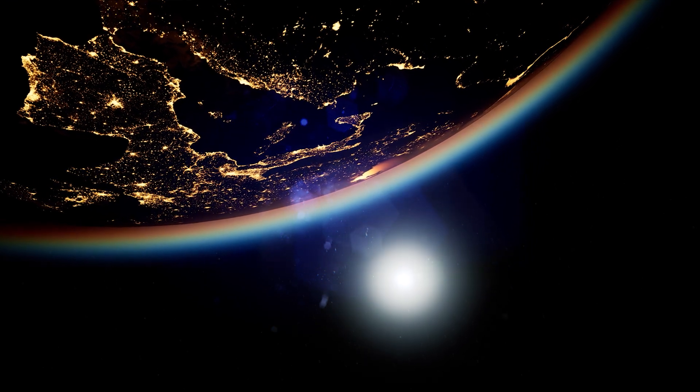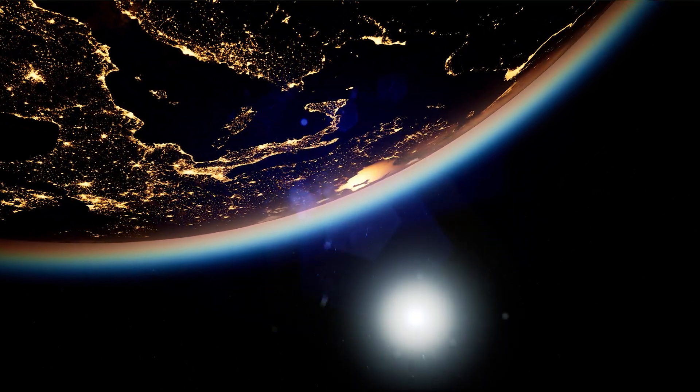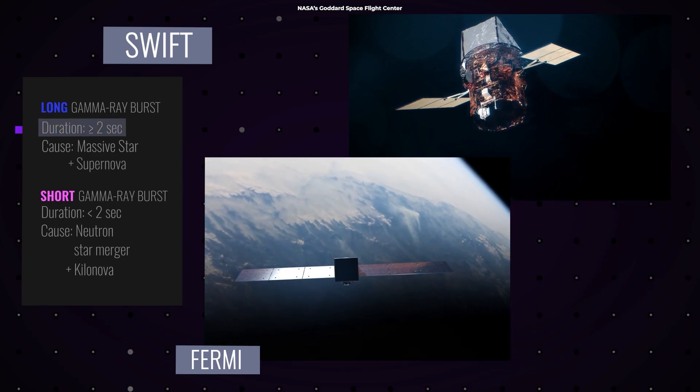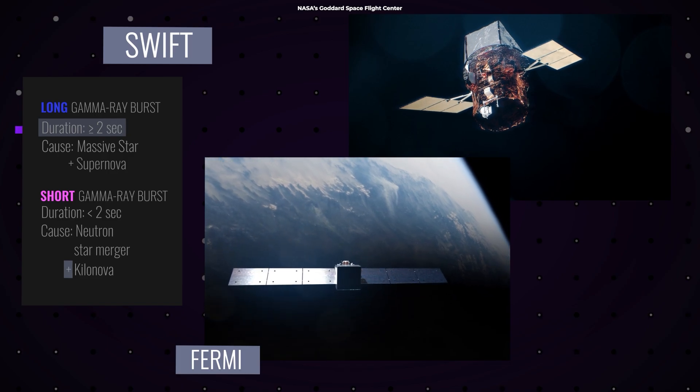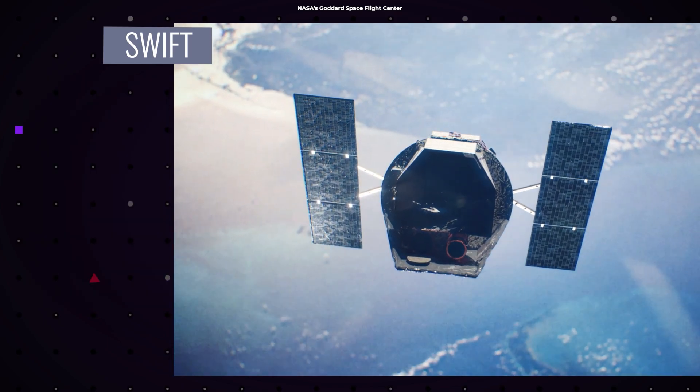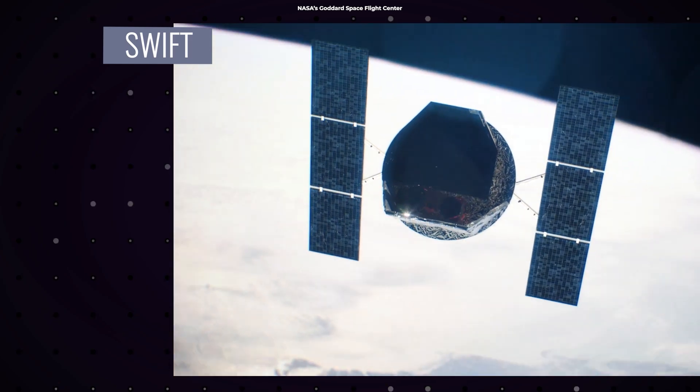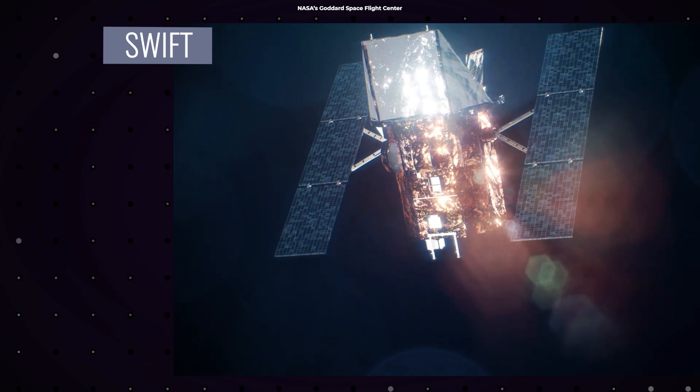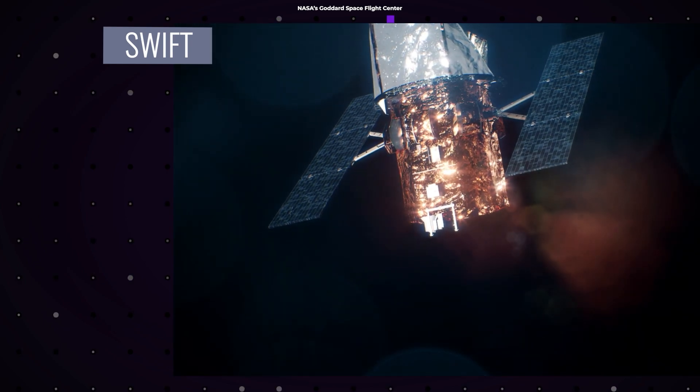Now, you might be wondering, how on Earth do we know all this? Well, it's all thanks to some high-tech space telescopes like the Fermi Gamma Ray Space Telescope, and the Swift Gamma Ray Burst Mission. These observatories are like cosmic detectives, sniffing out gamma ray radiation and helping us piece together the puzzle of these incredibly powerful events.